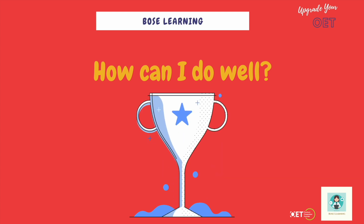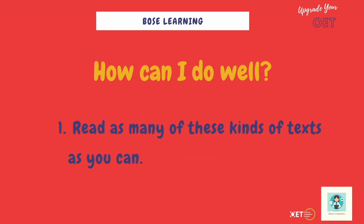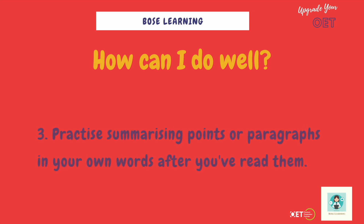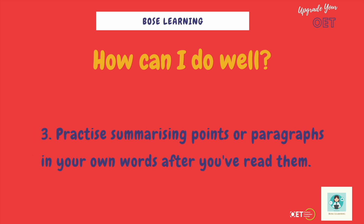And now the question you've all been waiting for — how can you do well? I'm going to give you five easy tips. First, read as many of these kinds of texts as you can. They're everywhere — in journals, in the continuing professional development material you already have to read. Read it in English and have a look online as well. Second, make a note of any new vocabulary you come across. Keep a notebook, find out what unfamiliar words mean, write them down, and use English-to-English translations. Third, as you're reading, practice summarising points or paragraphs in your own words after you've read them. You don't need to write it down — just read a paragraph, then say it back in your own words.